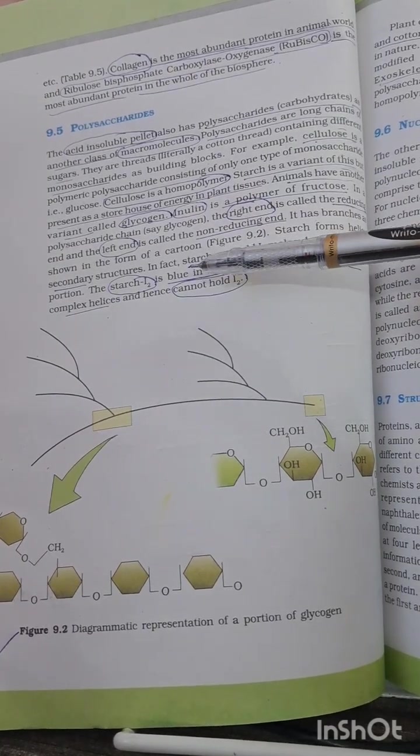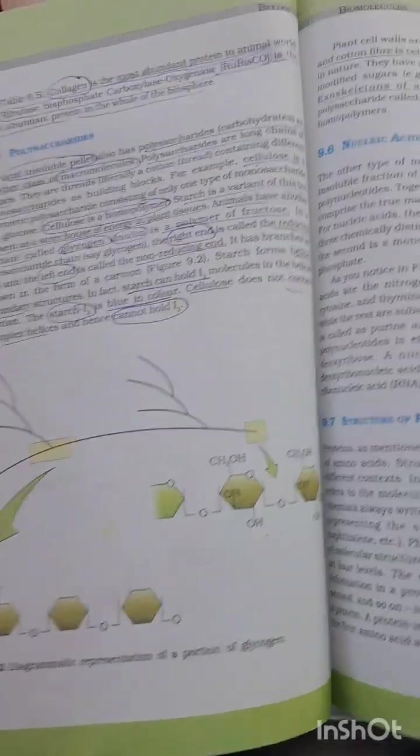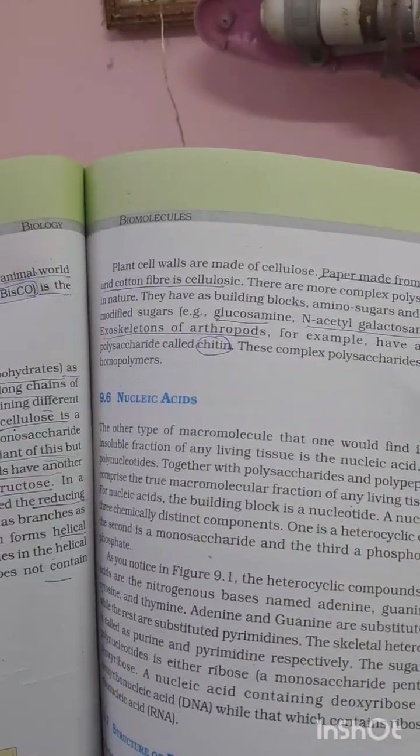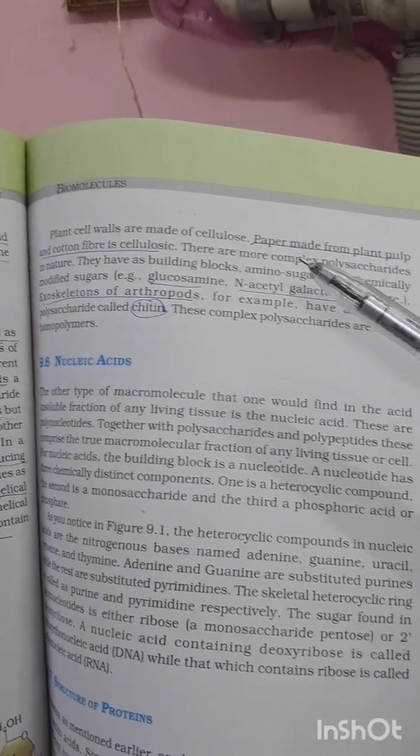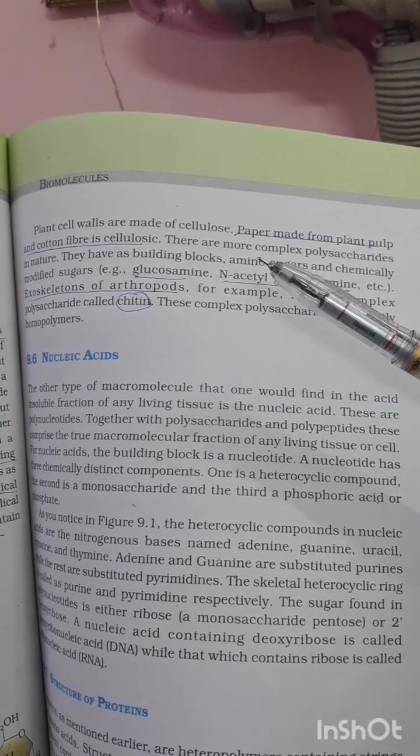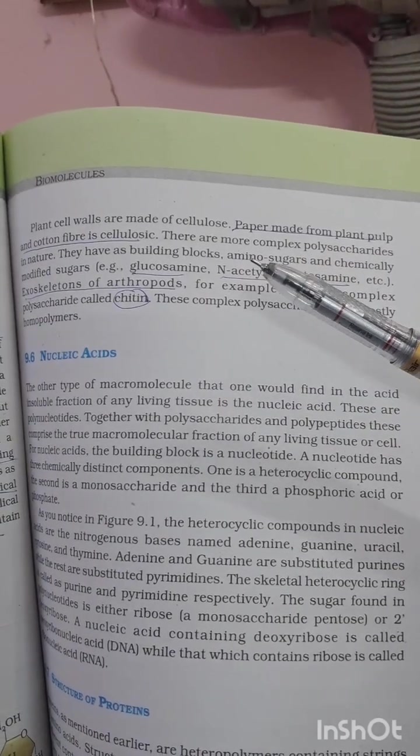Now coming to the next paragraph, it is mentioned that paper made from plant pulp or cotton fiber is cellulose. This might be asked as a fact question. And amino sugars are chemically modified sugars.